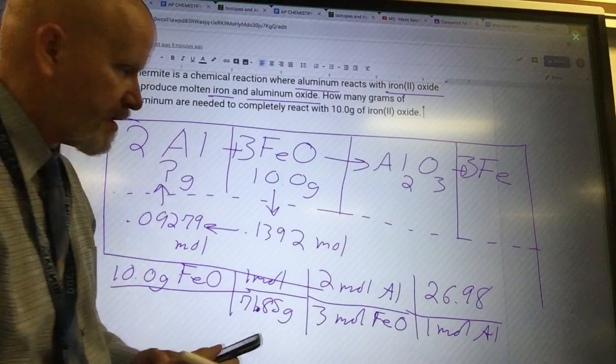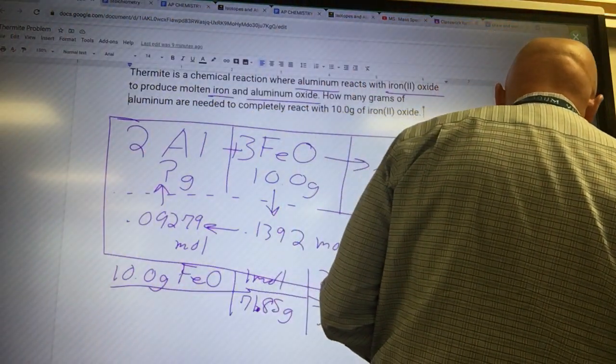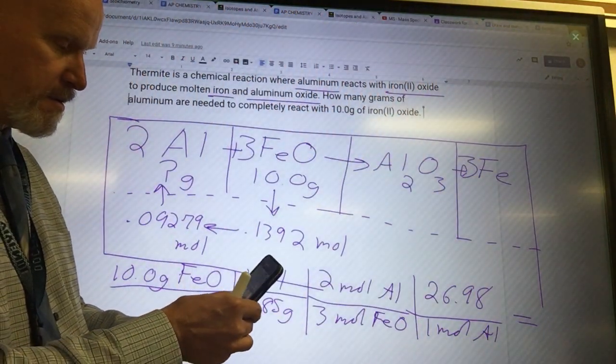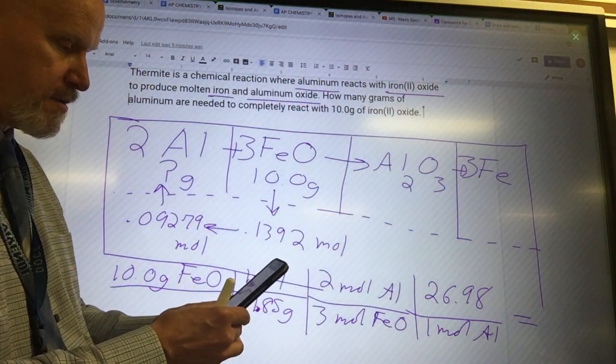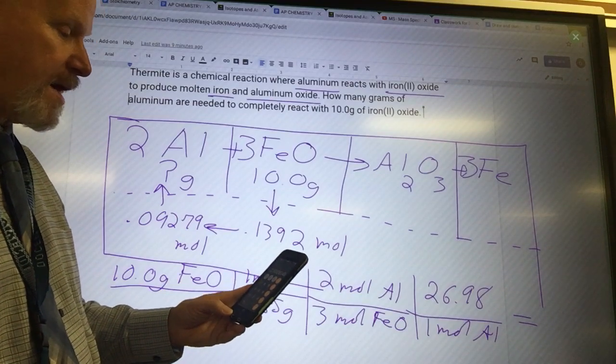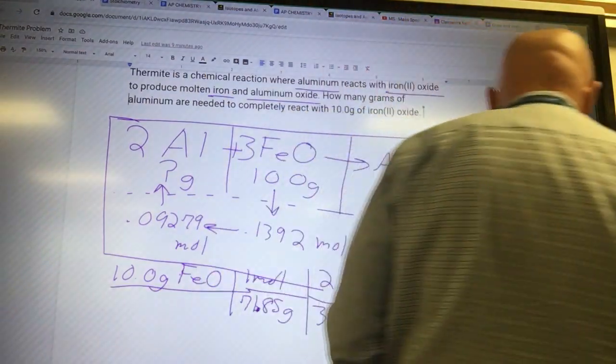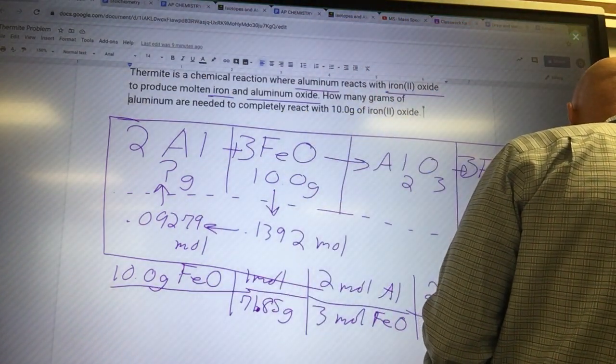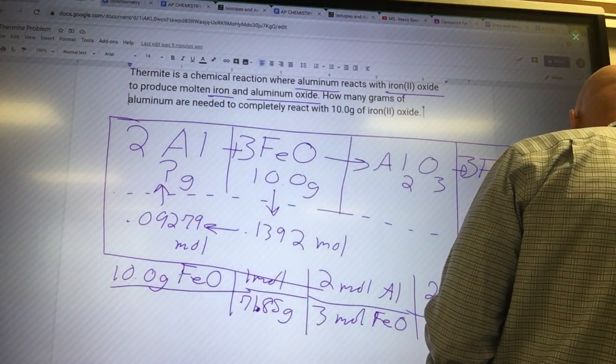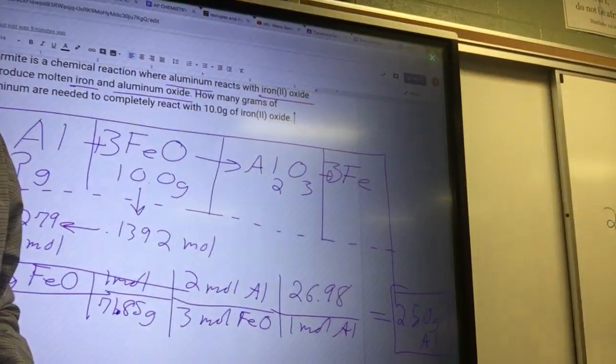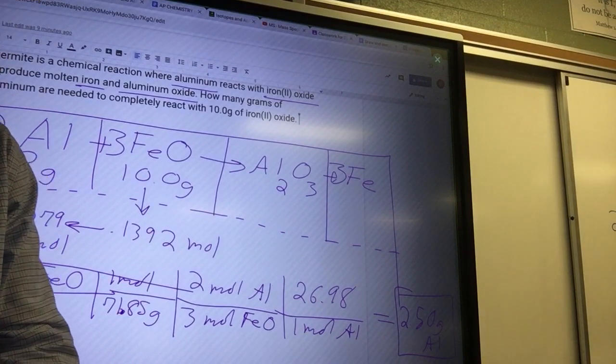So basically, if I got the moles of something and I multiply by the molar mass, I'm going to get back up into here. So I get 2.50 grams.